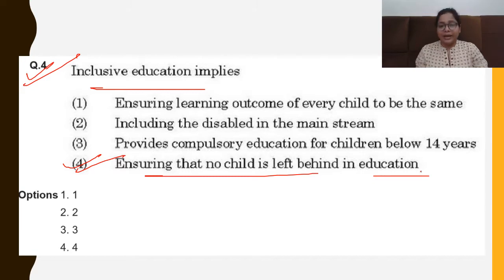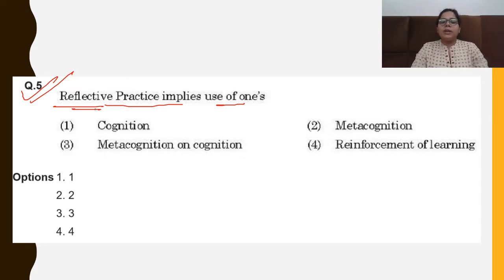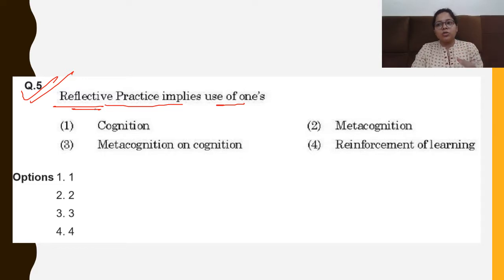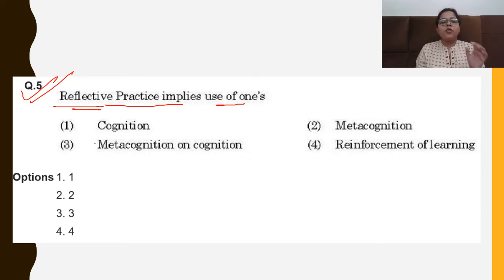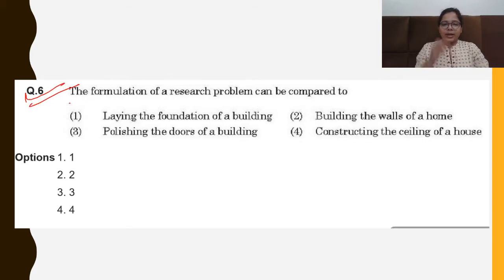Next: reflective practices implies the use of — options are cognition, metacognition, metacognition on cognition, or reinforcement of learning. To understand this question you need to know what cognition and metacognition mean. Cognition means using one's own mental ability; metacognition means thinking about one's own thinking. The correct answer is option C — metacognition on cognition.